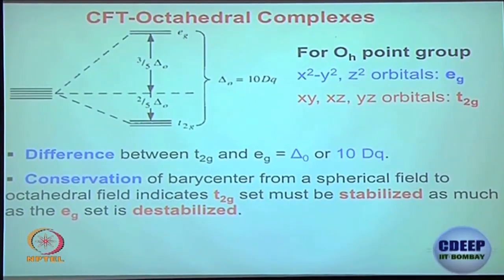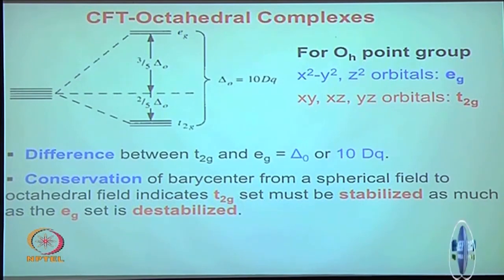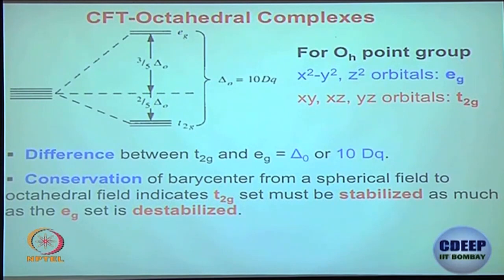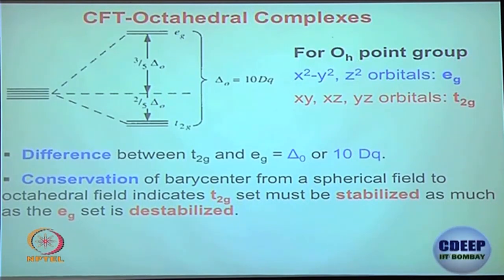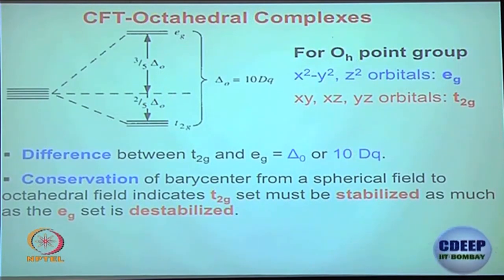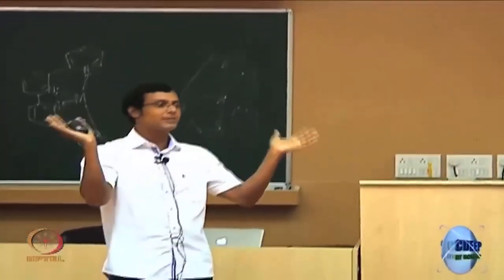This is also called Ligand Field Stabilization Energy. If the ligand is strong — for example cyanide is a strong ligand — the gap delta₀ between T2g and Eg will be large. Water is a weaker ligand; fluoride and chloride may be weak ligands; CO is a strong ligand. Depending on how large this energy gap is, the electrons will be distributed differently.